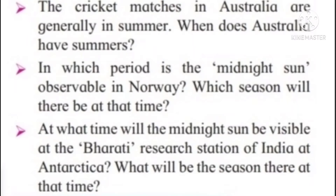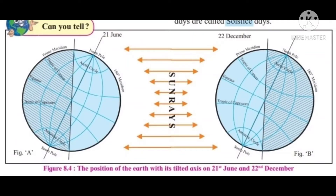At what time will the midnight sun be visible at Bharti Research Centre of India at Antarctica? What will be the season there at that time? The midnight sun will be visible at Bharti Research Centre of India at Antarctica from late September to 24th October. It will be summer season.